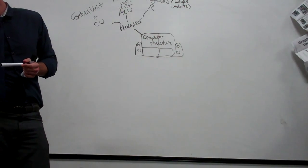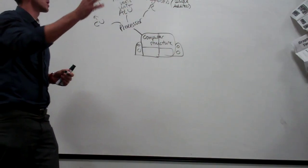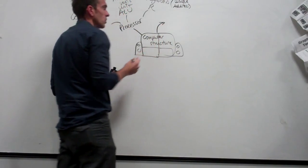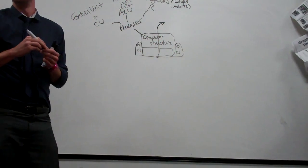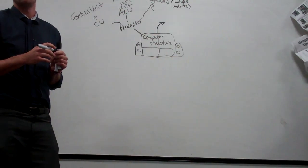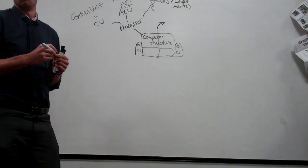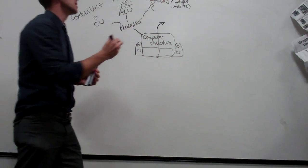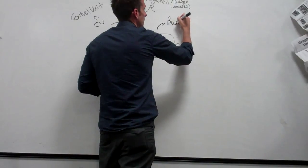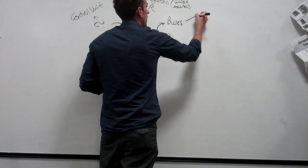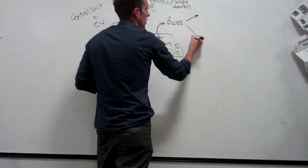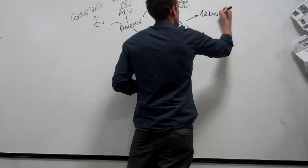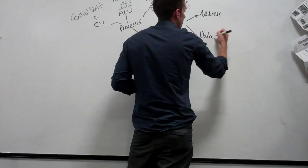So the reminder on the processor, and then we're talking about the more grown-up version of the processor where we learned about three new important bits: buses. What were the buses we spoke about at length? The address bus, data bus, and control bus. Address bus and data bus — we'll come back to the control bus in a minute.